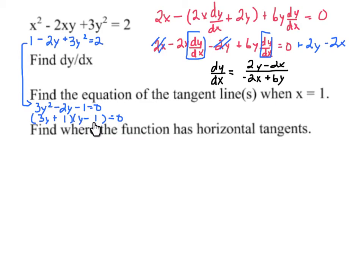So I have two points. x is 1, and y is negative 1/3. And x is 1, and y is 1.